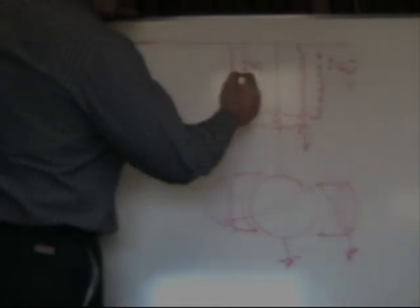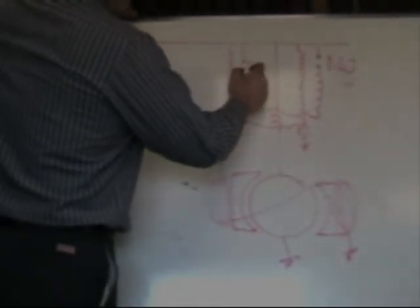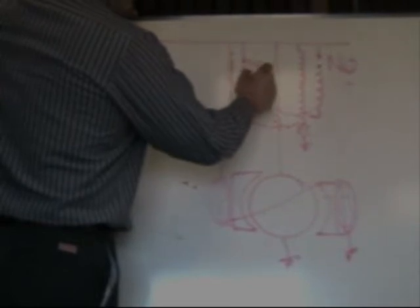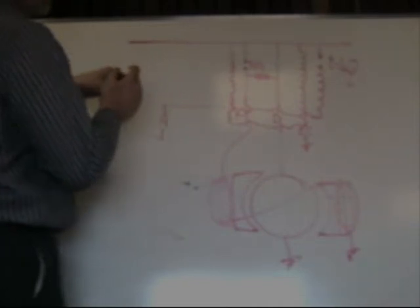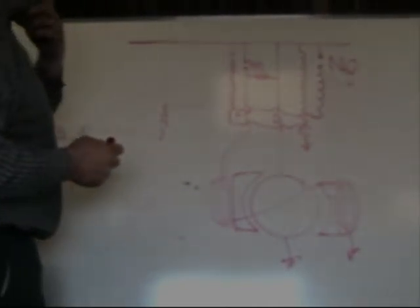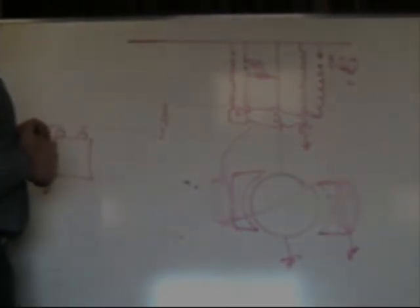So we have to put a resistor across here, across the points, so that the points don't spark. Otherwise our points won't last very long at all.